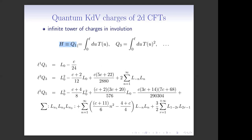Let's start with the Hamiltonian of two-dimensional CFT. I quantize my CFT on a cylinder — that's what is called radial quantization. My space is a circle of circumference L, and the coordinate on the circle is u. If I integrate the stress-energy tensor, I get the Hamiltonian, called Q1. But then there is an infinite number of charges. The first non-trivial charge is called Q3, and they are all indexed by odd numbers. Q3 is just an integral of T squared. Q5 is an integral of T cubed plus an additional term.